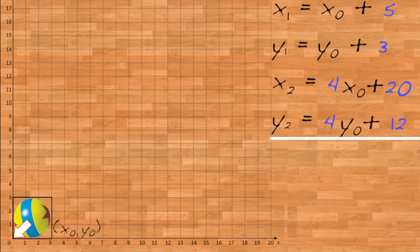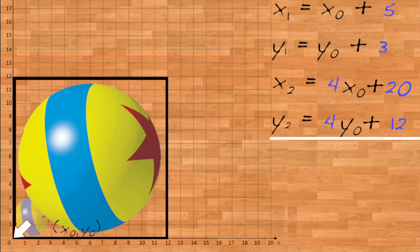For comparison, let's do the operations in the opposite order. Scale first, that is, x1 equals 4 times x0 and y1 equals 4 times y0. Then translate.